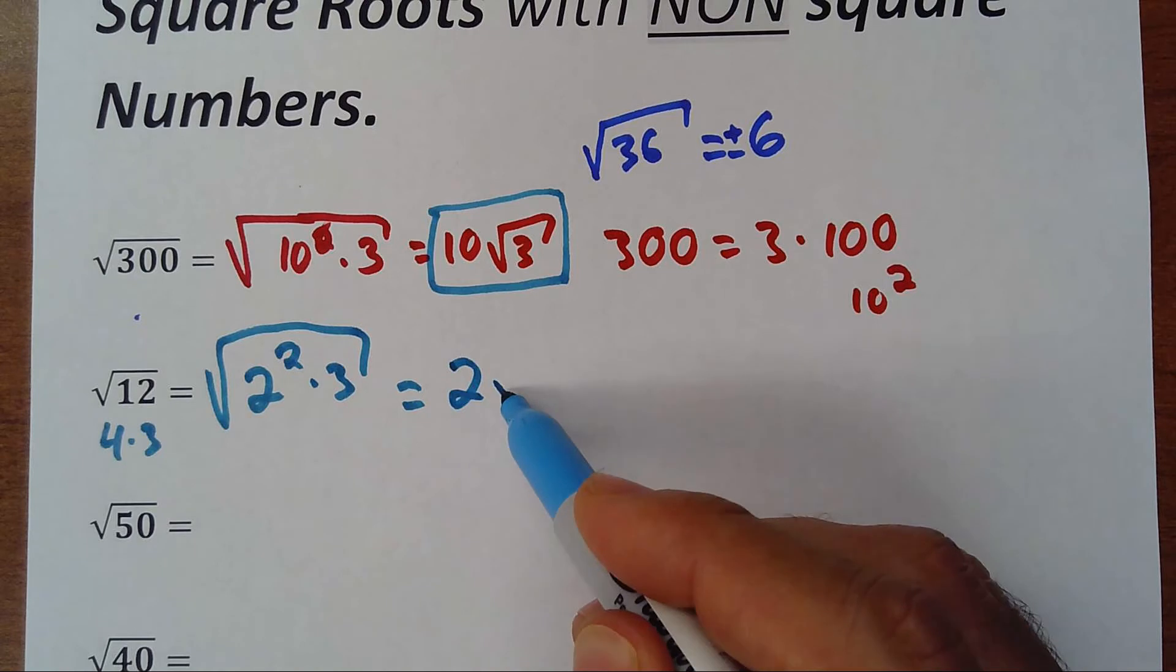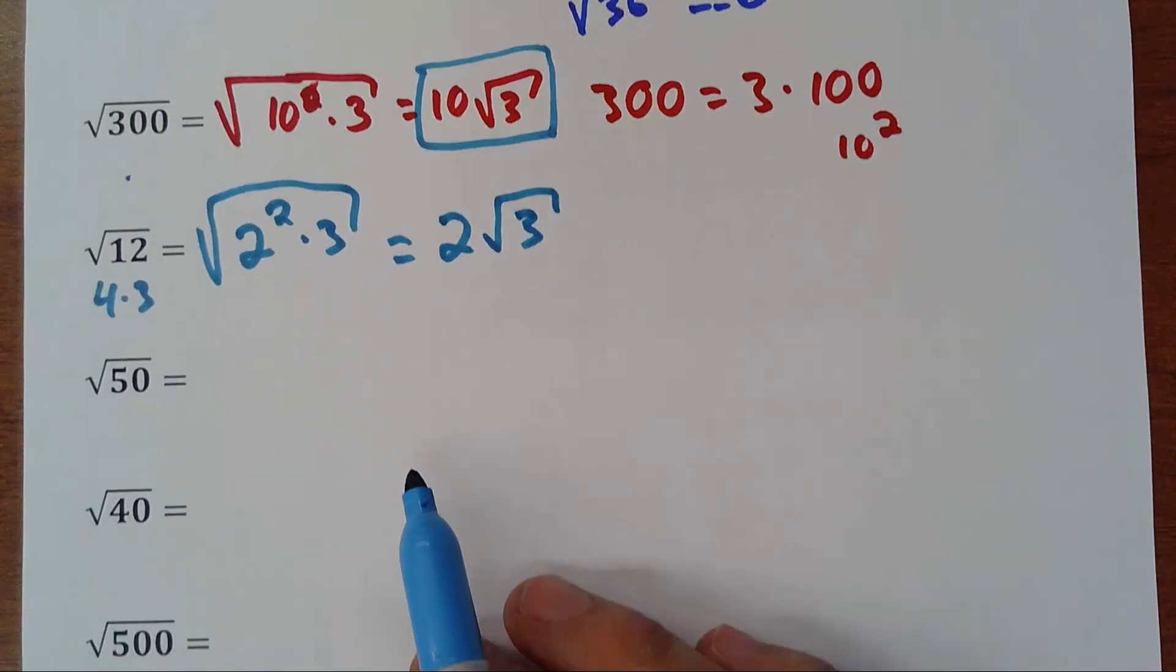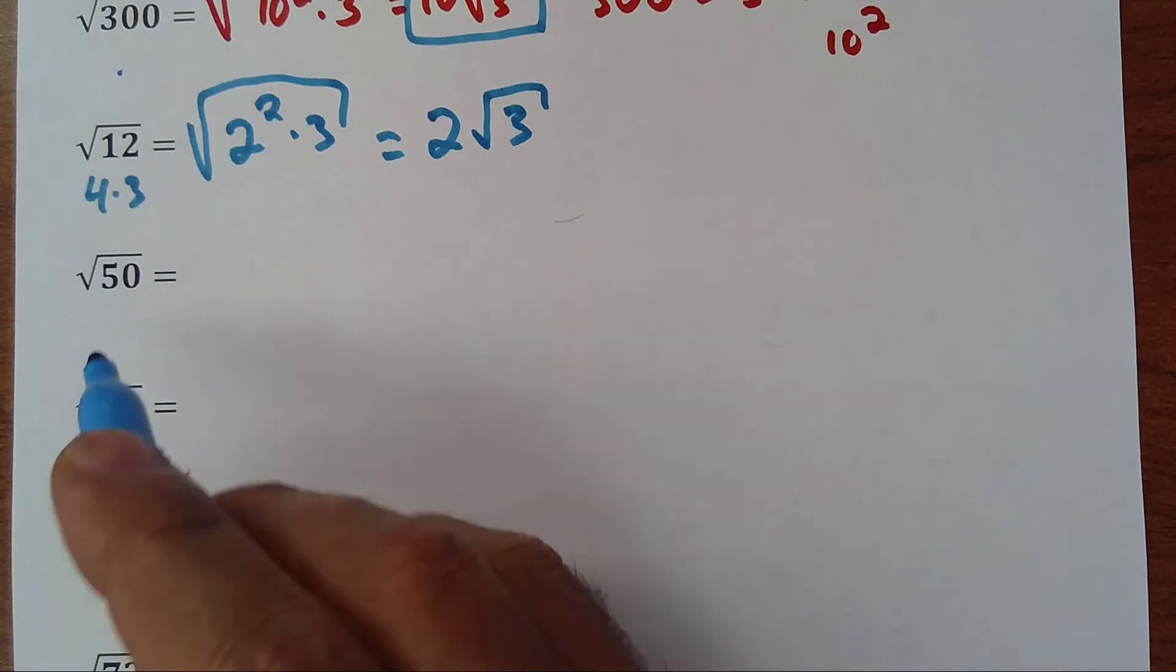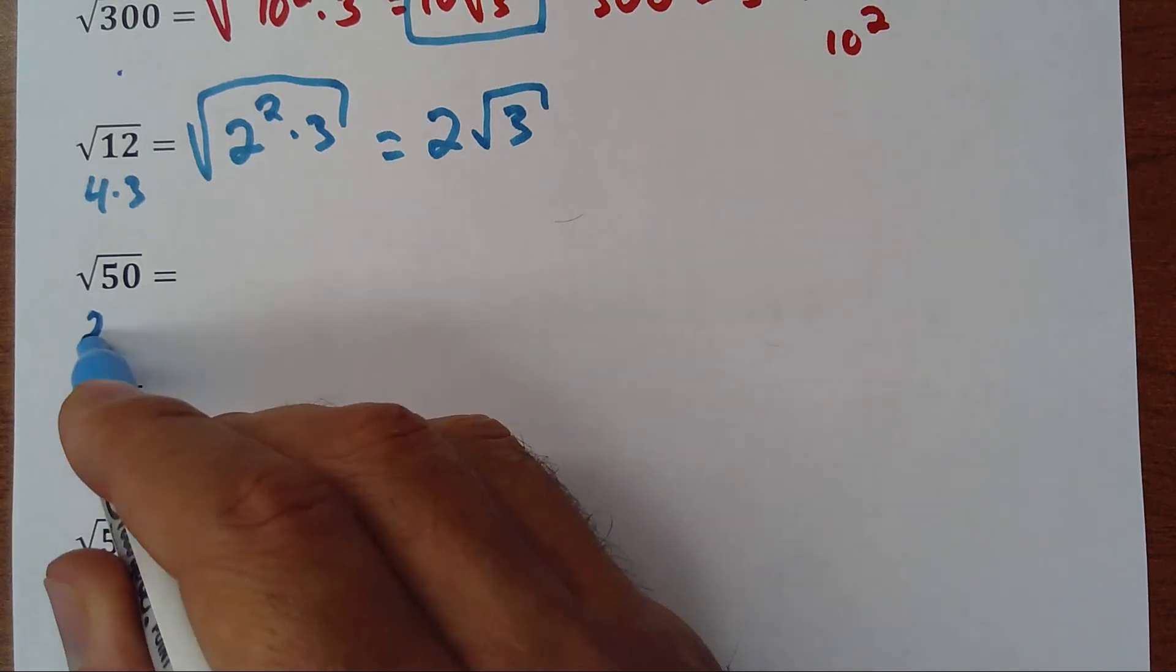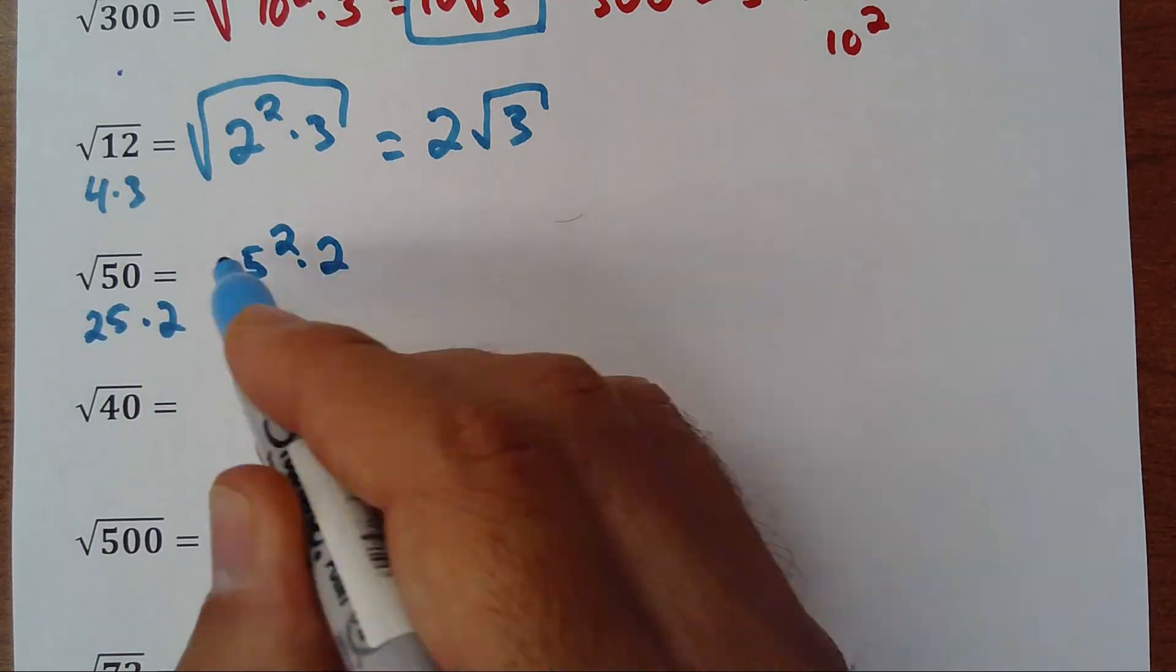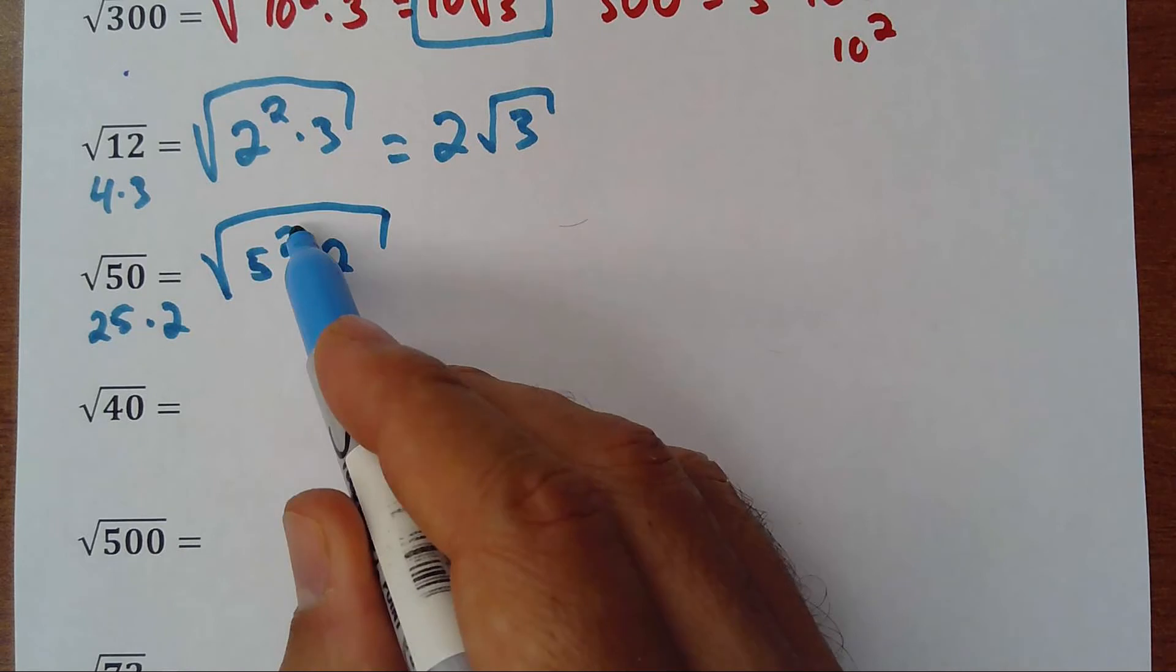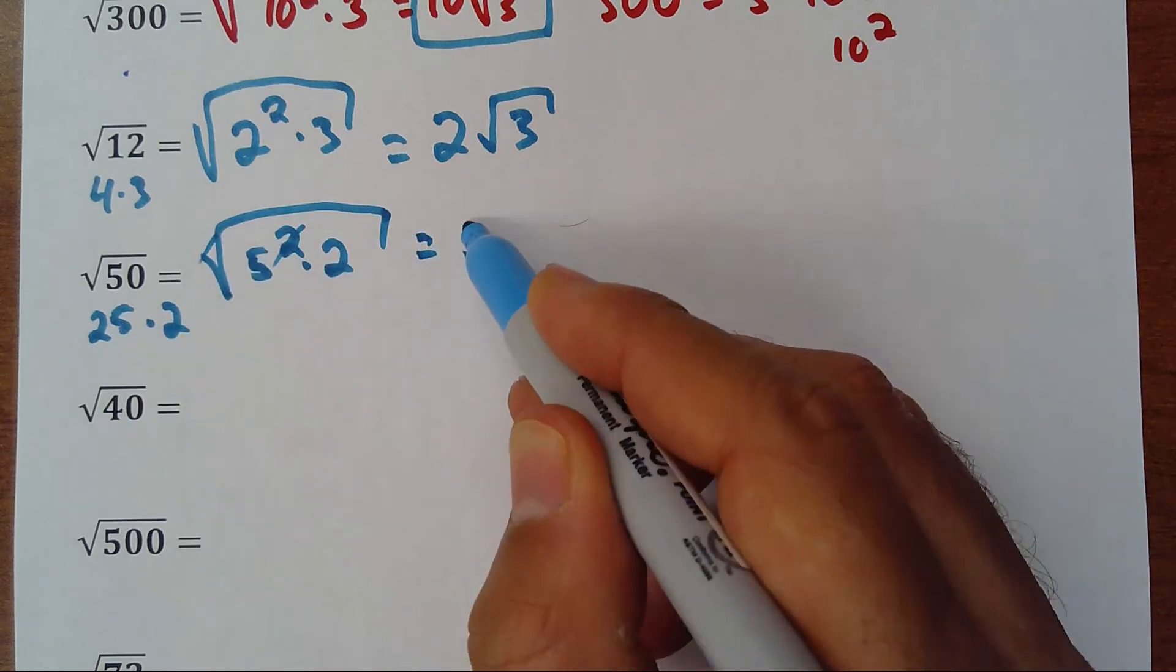50 is 2 times 25, and 25 is 5 squared. So 25 times 2, so 5 squared times 2 inside of the root. This square cancels with the root, 5 goes outside, and the 2 stays inside. That would be the answer for that.